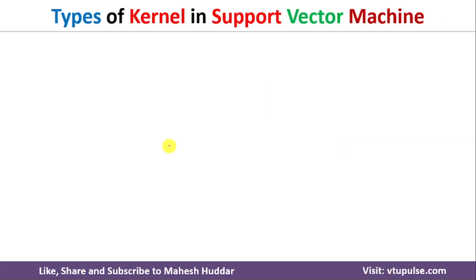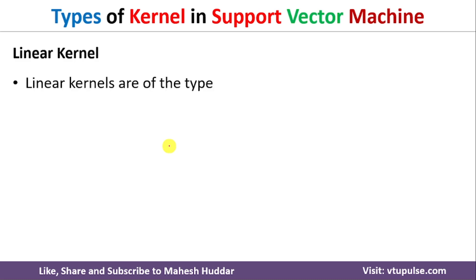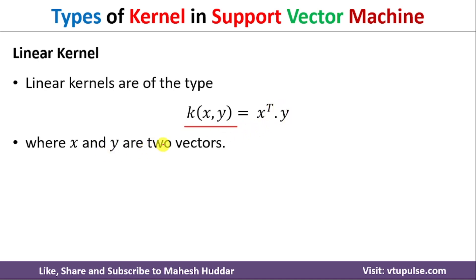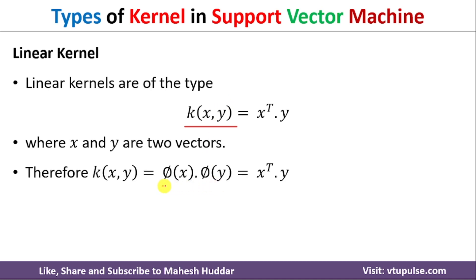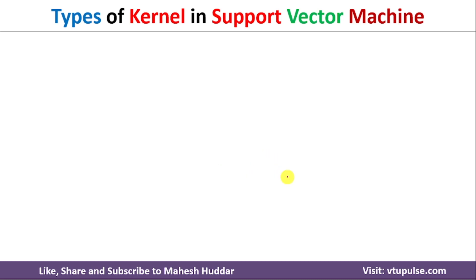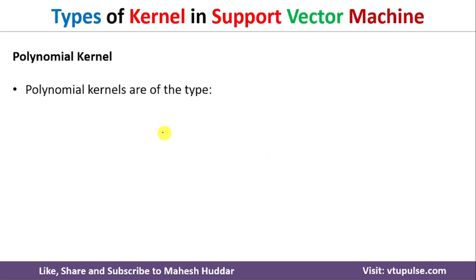The first kernel is the linear kernel. The linear kernel is defined as k(x,y) = x transpose y, where x and y are the two vectors, or you can say the two given data points. This is equivalent to the dot product between the mapping function — phi(x) dot phi(y) is equivalent to x transpose y.